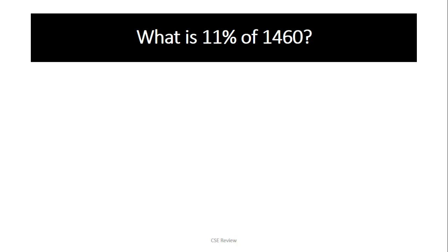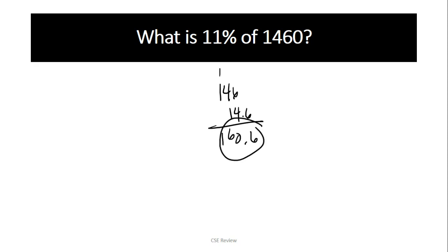Next: what is 11% of 1460? This is even easier. You have 146, which is 10% — move the decimal place once — plus another 1%, which is 14.6, since we move the decimal place one more point. That gives you 0.6 here, making it 160.6. Notice how fast that process is. If you're taking the test, you can even do this mentally once you're used to it. That is why we're practicing really early. So 146 is 10%, and 14.6 is 1%. Put them together because 11 is 10 plus 1, and you have the answer.